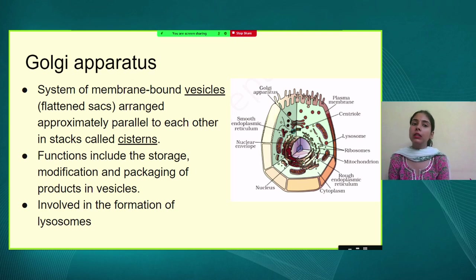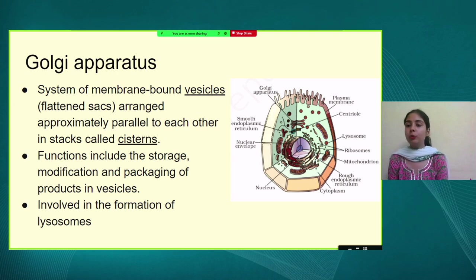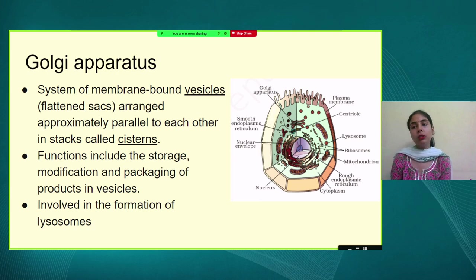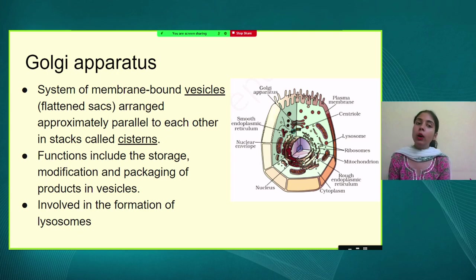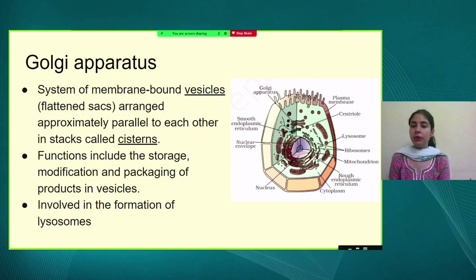The next cell organelle is the Golgi apparatus, discovered by Camillo Golgi — hence the name. Golgi apparatus is present in close association with the endoplasmic reticulum. As seen in the image, Golgi apparatus are present in the form of vesicles arranged upon one another in a parallel fashion, forming stacks known as cisterns. Its function is to store, modify, and pack the proteins and lipids produced by the ER, then send them to the targeted site wherever required in the cell.